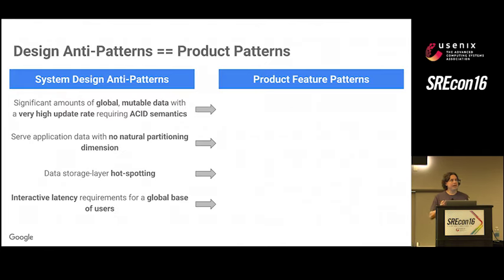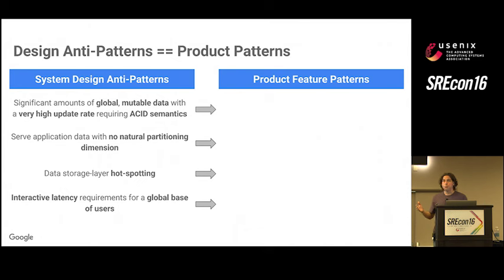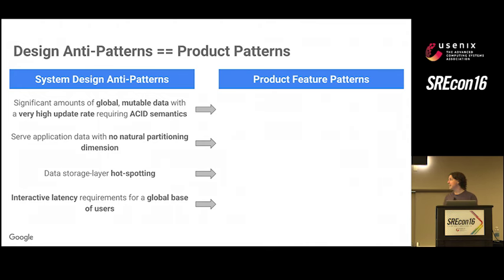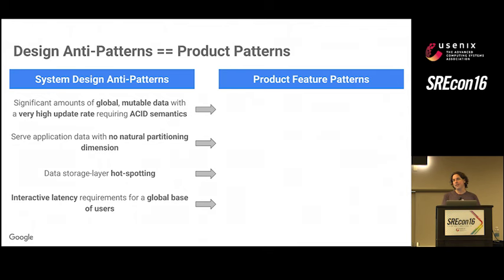When I started to go into this space, I went into social in part because I thought the design space was really interesting — there were a different set of problems than you see in traditional distributed systems. As a system designer, there are a number of things I try to avoid: having globally mutable state that requires strong semantics and a very high update rate, having a large serving data set that has no natural partitioning dimension, and requiring access to particular pieces of data at dramatically higher rates than others, because that tends to produce hot spotting in your storage system.